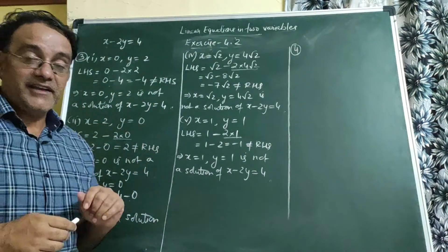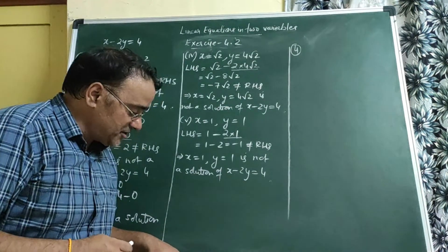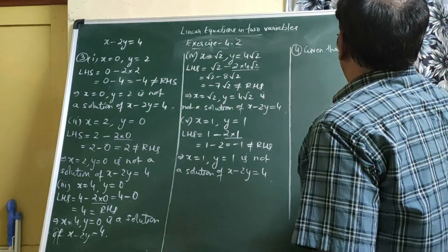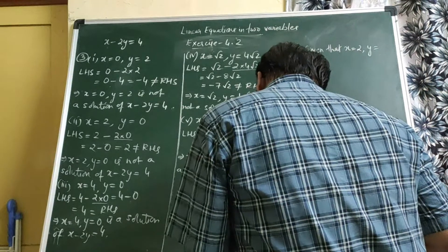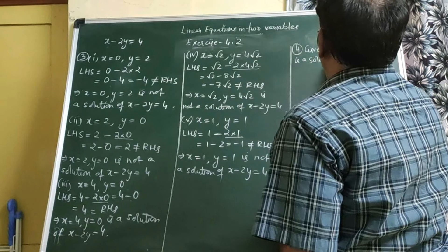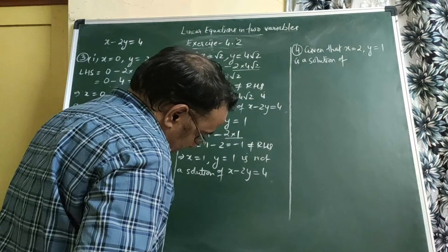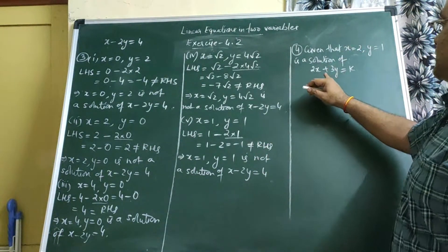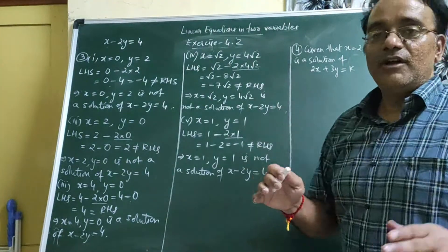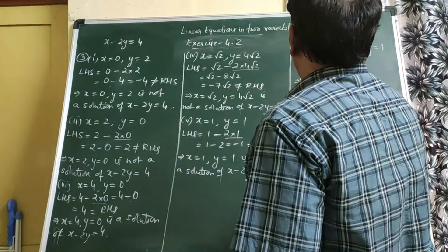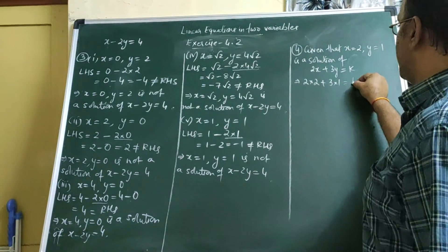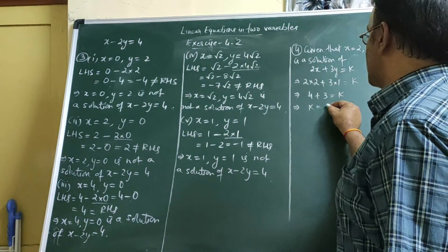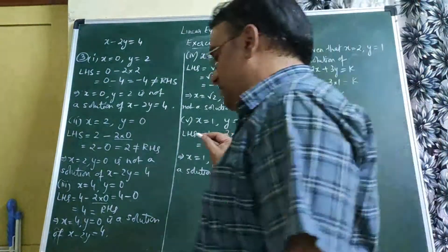Question 4: find the value of k if x = 2 and y = 1 is a solution of the equation 2x + 3y = k. Since (2,1) is given as a solution, we substitute into the equation: 2×2 + 3×1 = k, giving 4 + 3 = k, so k = 7. That is the final answer.